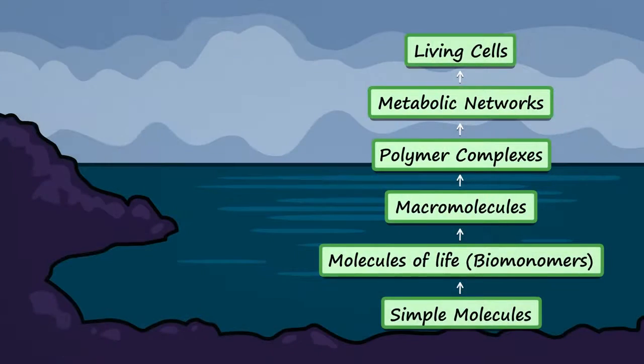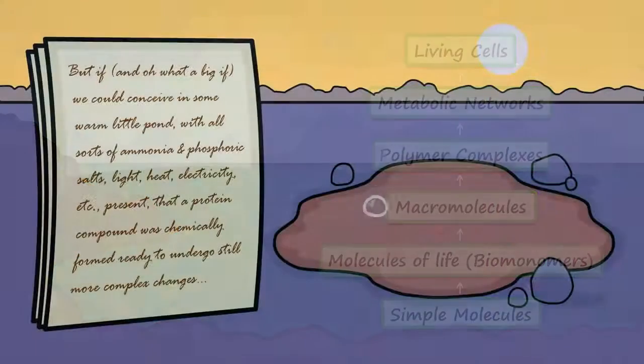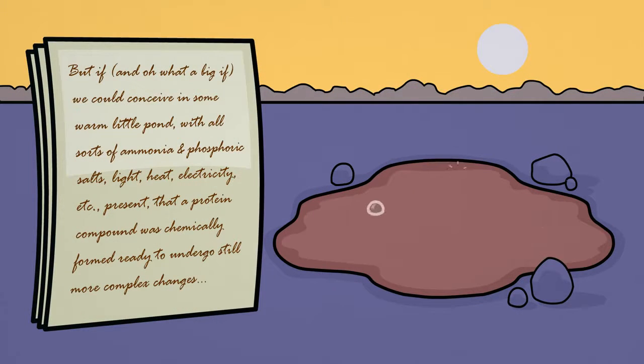Together, these discoveries tell us that Oparin's primordial soup and Darwin's warm little pond could have easily existed in one way or another on our ancient planet.